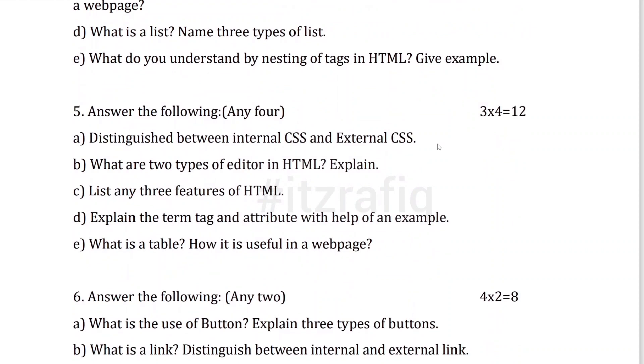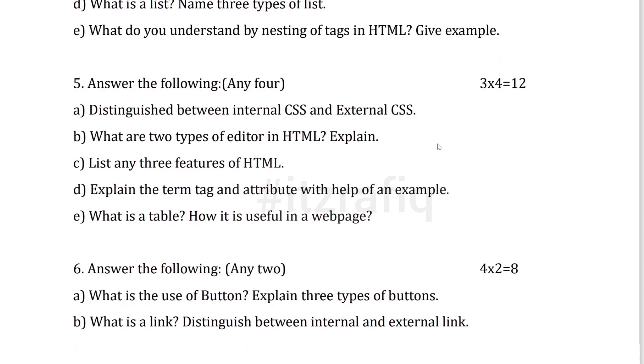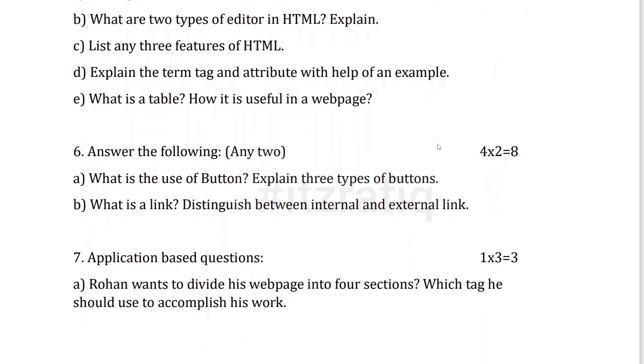After that, question number five: distinguish questions for three marks, four questions total 12 marks. Then two marks questions, total two questions, like what is the use of button, explain three types of button.